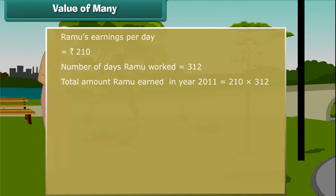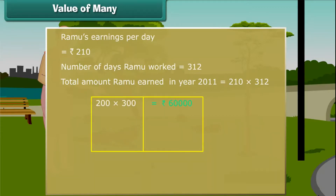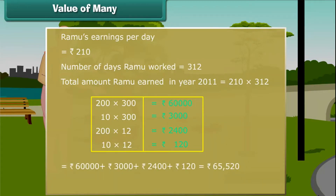Let us break the multiplication into 4 steps. First, we multiply 200 and 300, then 10 and 300, then 2 and 12, then 10 and 12. Now we add up the products to get 65,520 rupees. Therefore, Ramu earned 65,520 rupees in the year 2011.